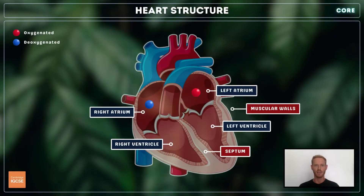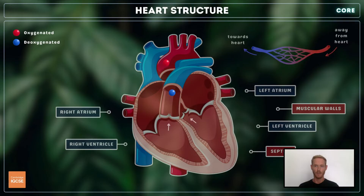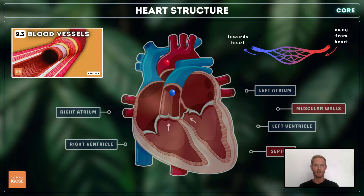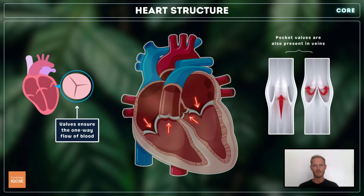The walls of the atria contract first, sending the blood down into the ventricles, and then the ventricles contract, forcing the blood out of the heart in arteries. Remember that blood is carried away from the heart in arteries and returns in veins, and we'll cover the main blood vessels of the heart in topic 9.3. To ensure that blood doesn't move backwards, one-way valves sit between the different structures.